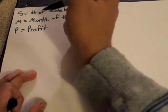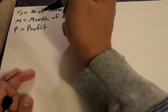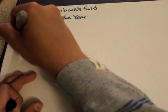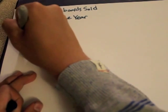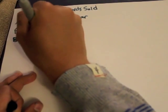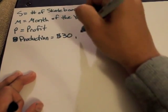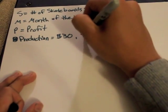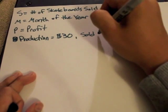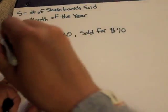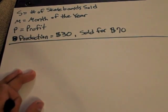Now we also need to know two more things. The cost of production of each board is $30. However, each board is sold for $70. And that is what we need to know to start out this equation.